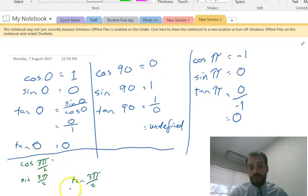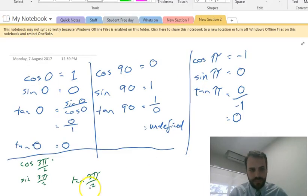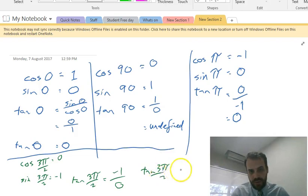Brings us to 3 pi on 2, which is 270 degrees. If I move this around, we end up with cosine being zero and sine being negative one. Zero and negative one. And tan 3 pi on 2 is going to be negative one divided by zero. And the world explodes again. So tan 3 pi on 2 equals undefined.